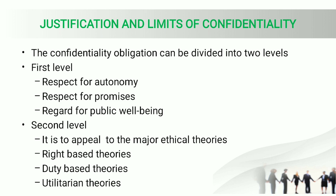The justification and limits of confidentiality can be divided into two levels. The first level includes respect for autonomy, respect for promises, and regard for public well-being. The second level includes respect for confidentiality and respect for major ethical theories such as rights-based theories, duty-based theories, and utilitarian theories. This concludes our topic on confidentiality — covering its definition, types, proprietary information, trade secrets, patents, the need for engineers to maintain confidentiality, and its justification and limits.